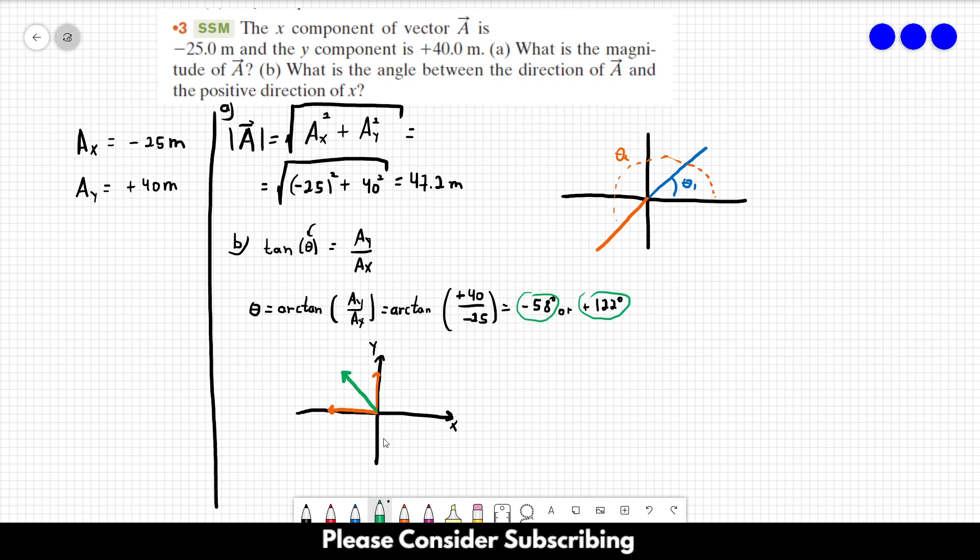Minus 58 is something like this, right? So, this is minus 58. And plus 122 is something like this. So, it's clear that our answer is plus 122 degrees. So, this is the answer of letter B.